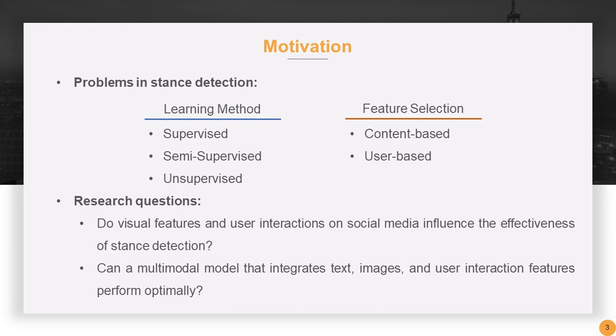But this information is not always visible, thus limiting the scope of detectable subjects. As for images mentioned earlier, they have not yet been used in relevant research. Therefore, we have proposed two research questions. The first one is whether the inclusion of images and the users interacting with the post are helpful for stance detection.